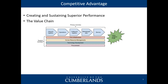Creating and sustaining superior performance — all of the support activities underneath that are enabled by information systems. For example, human resources: try and run a human resources department without keyword searching and resume data mining. And procurement — the management of ordering supplies, managing raw materials throughout the operational manufacturing process. These next four chapters in Bourgeois start to go into the strategic advantage, the strategic level view of information systems, as opposed to just the components that we all know and love.